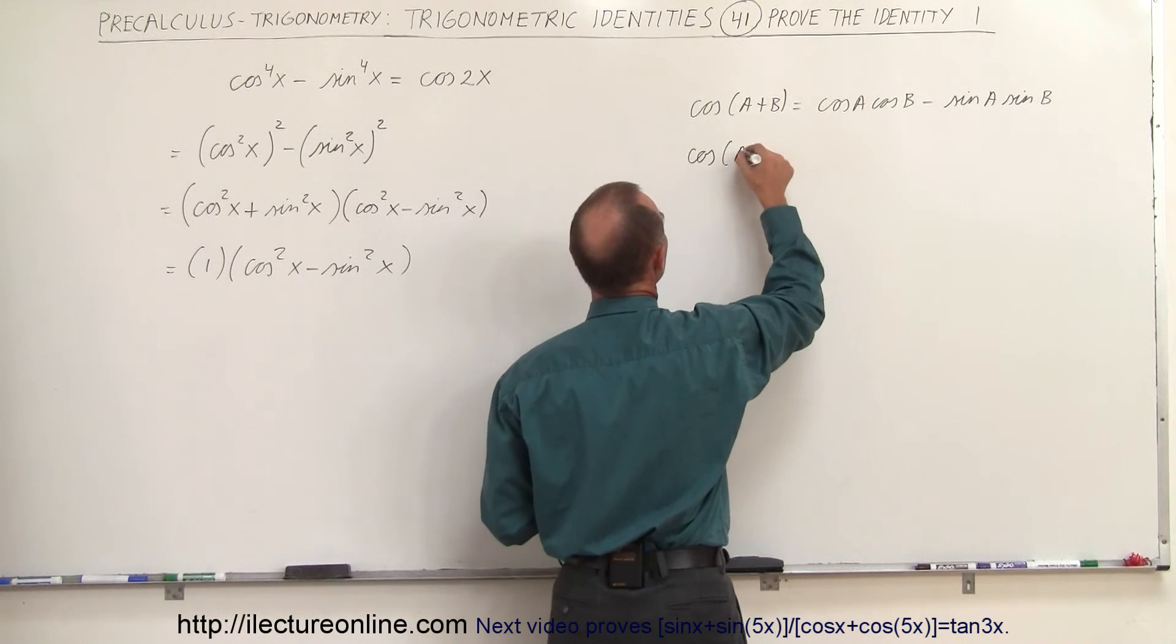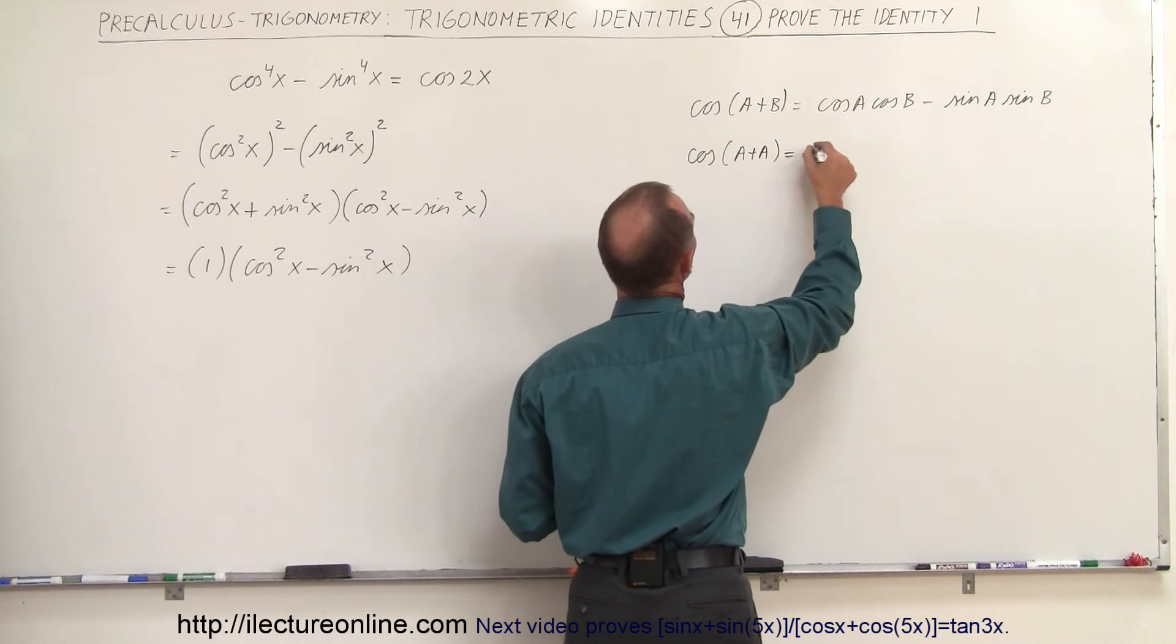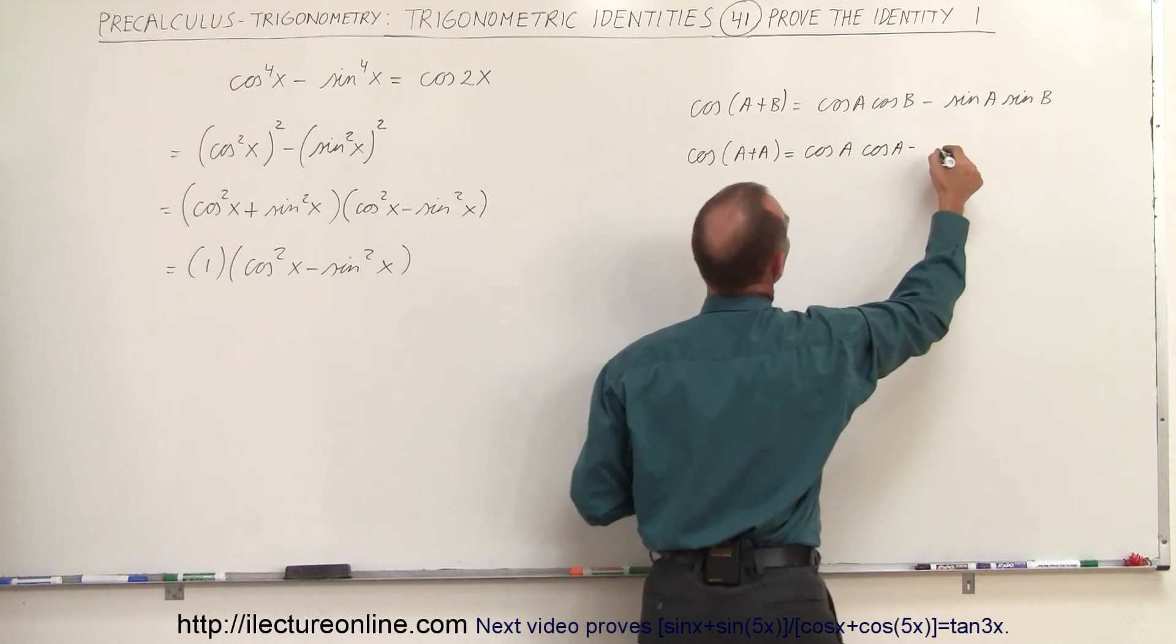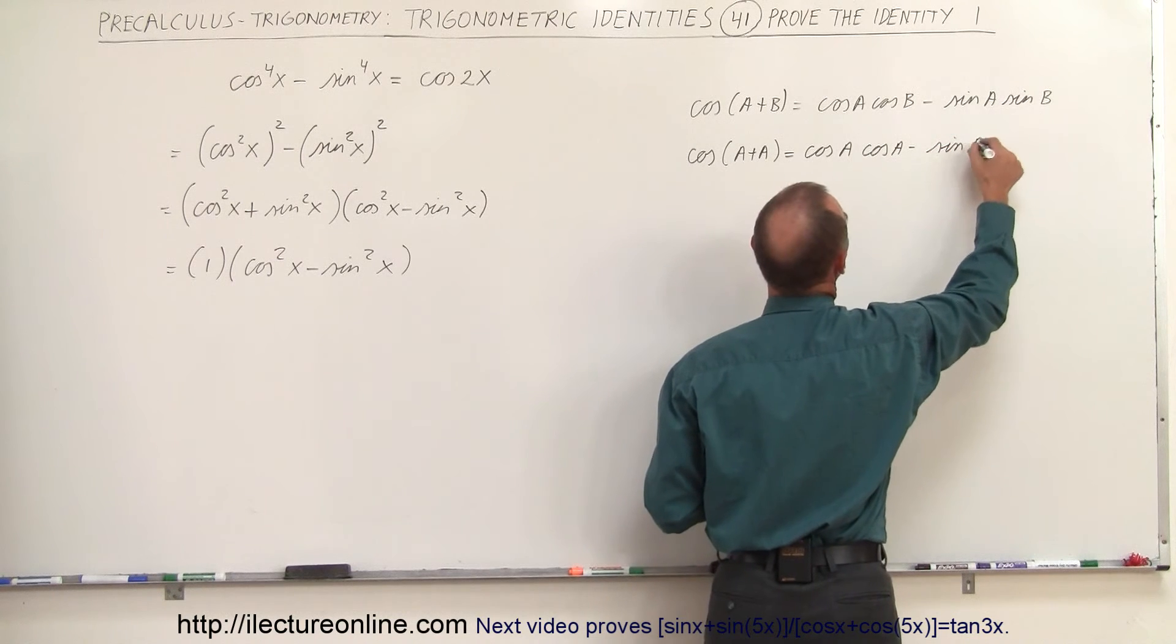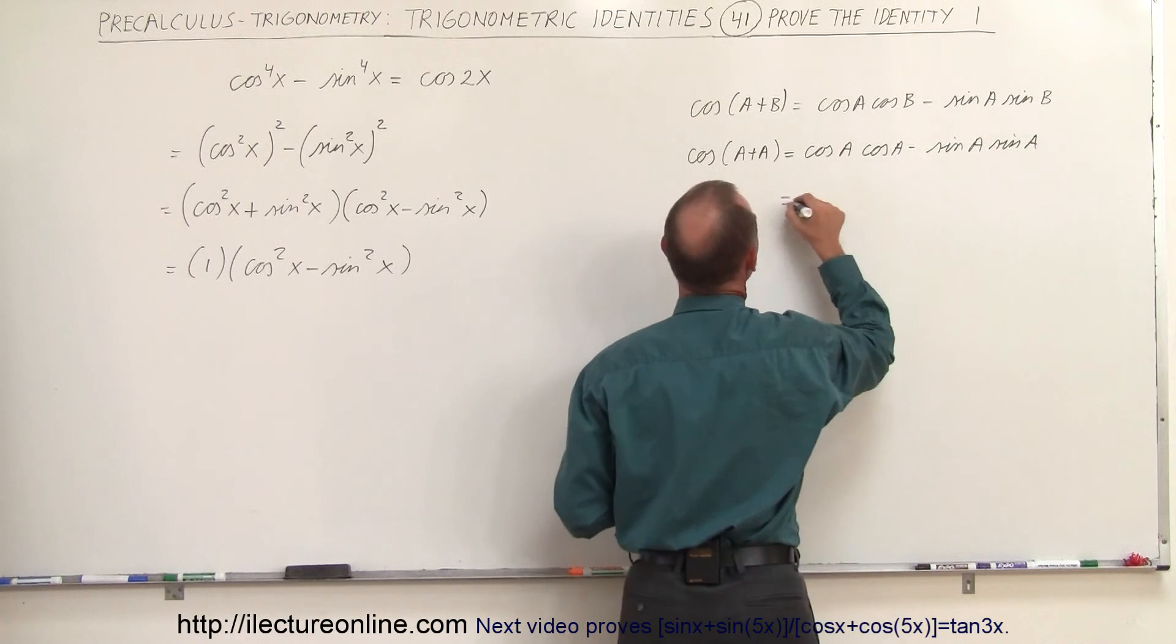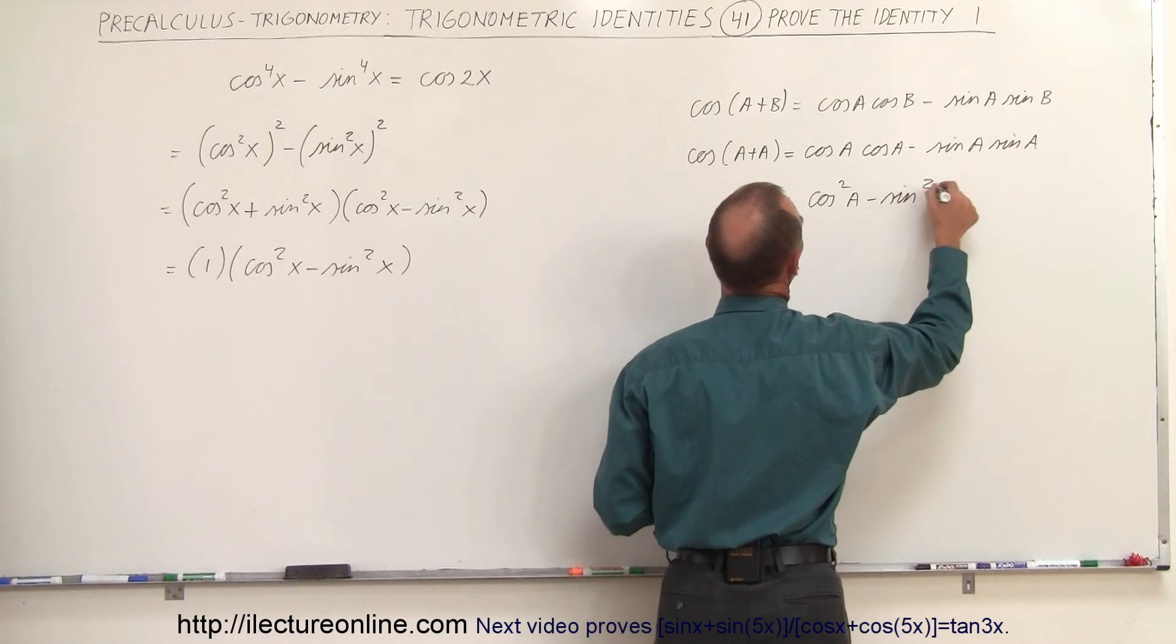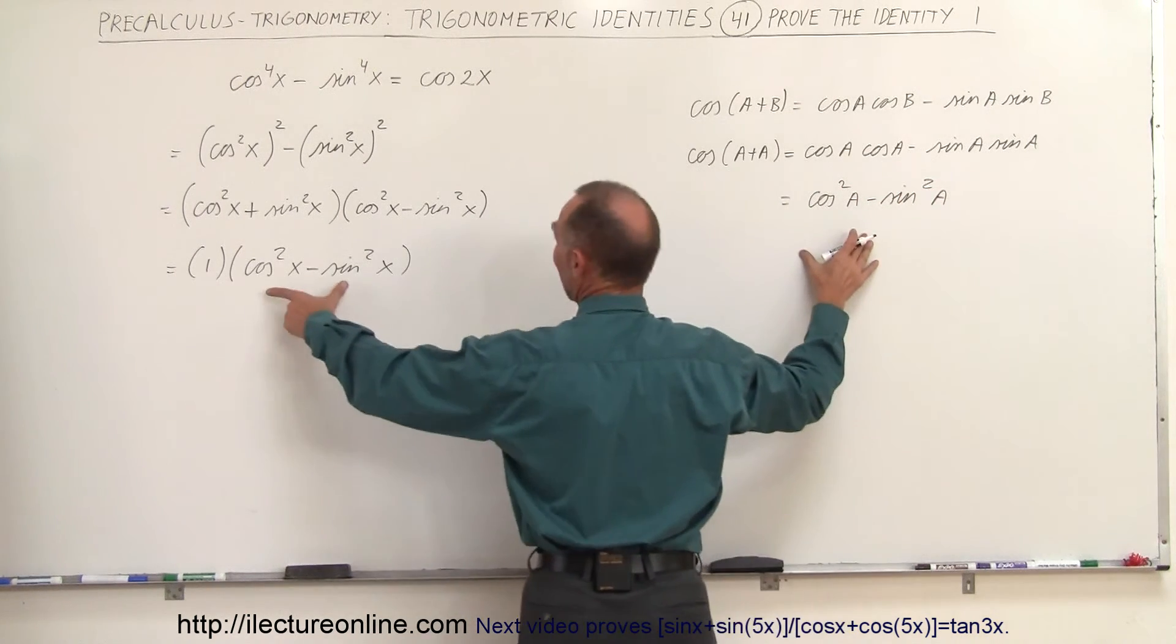So the cosine of a plus a, that is equal to the cosine of a times the cosine of a minus the sine of a times the sine of a. If I simplify that, this is equal to the cosine squared of a minus the sine squared of a, which is what I have over here.